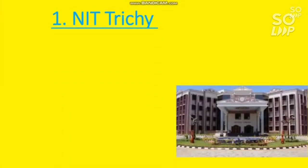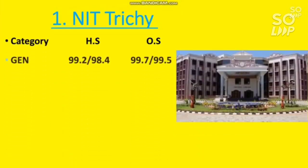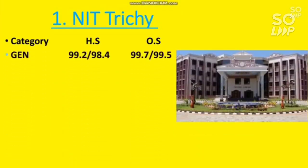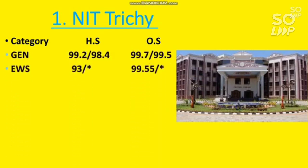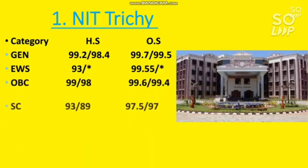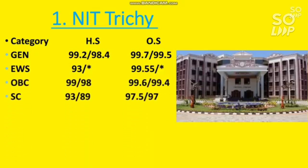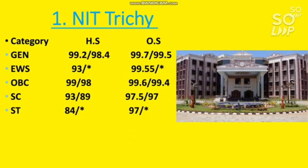Number one NIT is NIT Trichy. For General you need to score at least 99.7 percentile to get the EC branch in the top NIT of India. For EWS 99.55, for OBC 99.6, for SC 97.5, and ST 97 percentile.